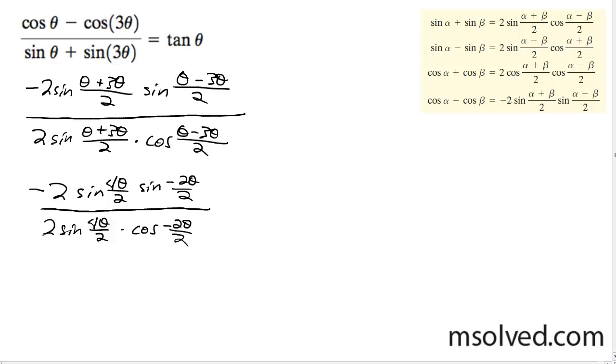And what we have here is you can see two like terms here. We can cancel these out. And then what happens here is we've got a negative sine, and you can pull another negative out of the sine here because it's an odd function.